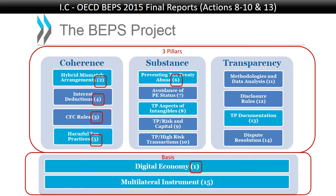Action 14 deals with dispute resolution. The OECD said we're not only going to try and catch taxpayers more easily, but we're also going to make sure that tax disputes get resolved more efficiently, more quickly, and more fairly. As part of resolving disputes more fairly, they suggest putting more arbitration clauses into treaties so that if countries cannot agree, the dispute goes to arbitration and an arbitration board decides which country is right — the adjusting country or the country that refuses to acknowledge the adjustment.